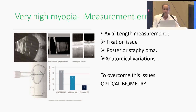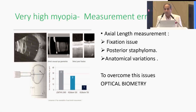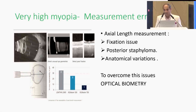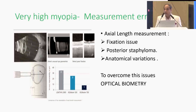Coming back to very high myopic patients — how can we have a measurement error? The axial length measurement is where we will falter. One of the problems is the fixation issue; the patient might not be fixating properly. But more importantly, anatomically, is the posterior staphyloma. This is the reason these eyes need optical biometry. We avoid immersion — there is no contact biometry in modern days — and most probably all these patients need optical biometry.